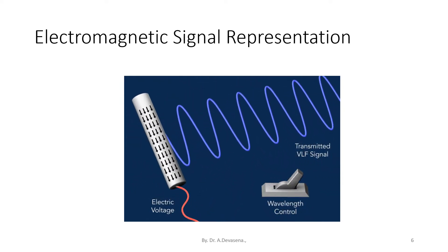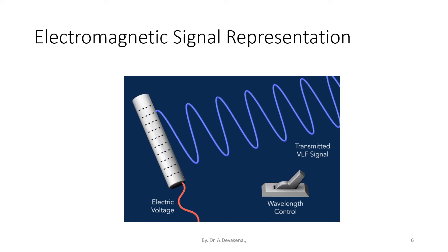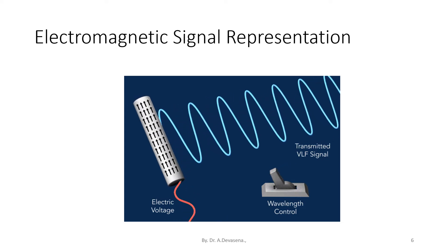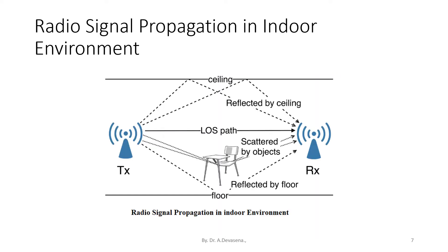In this diagram we are seeing that electric voltage is being converted into the transmitted VLF signal, and the wavelength control is also indicated here. Radio signal propagation in an indoor environment is shown here. In this diagram we are seeing that radio signal propagation takes place between the transmitter and receiver. The line of sight path, reflection by the ceiling, reflection by the floor, and scattering by objects are all indicated.